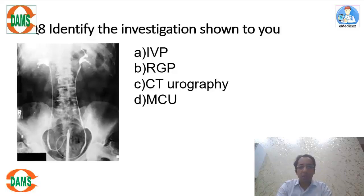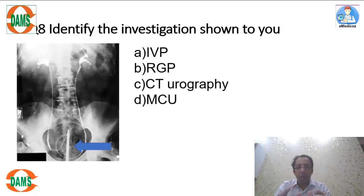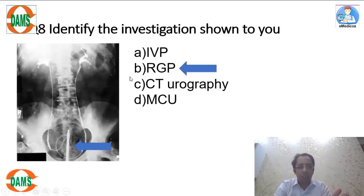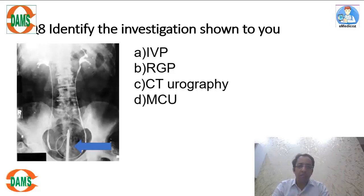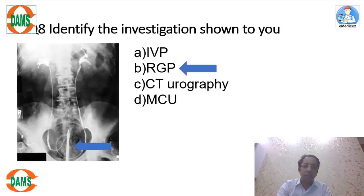This is another previous NEET image. You have to identify the investigation. Although you can see the urinary tract, look at the pelvis — a cannula has been introduced into the bladder via cystoscopy, and through that cystoscopic cannula, catheters have been placed into the ureters through which dye has been injected.